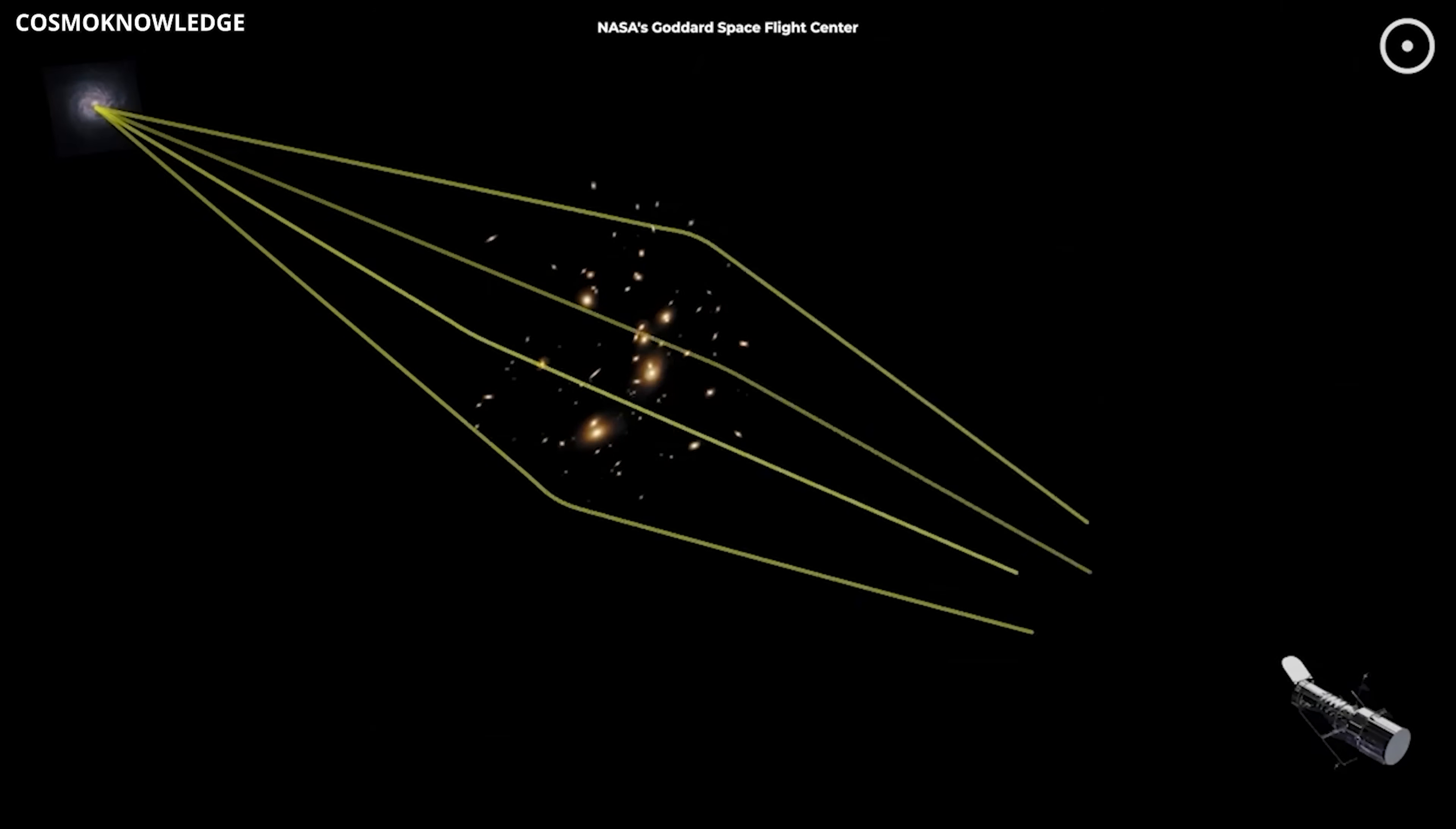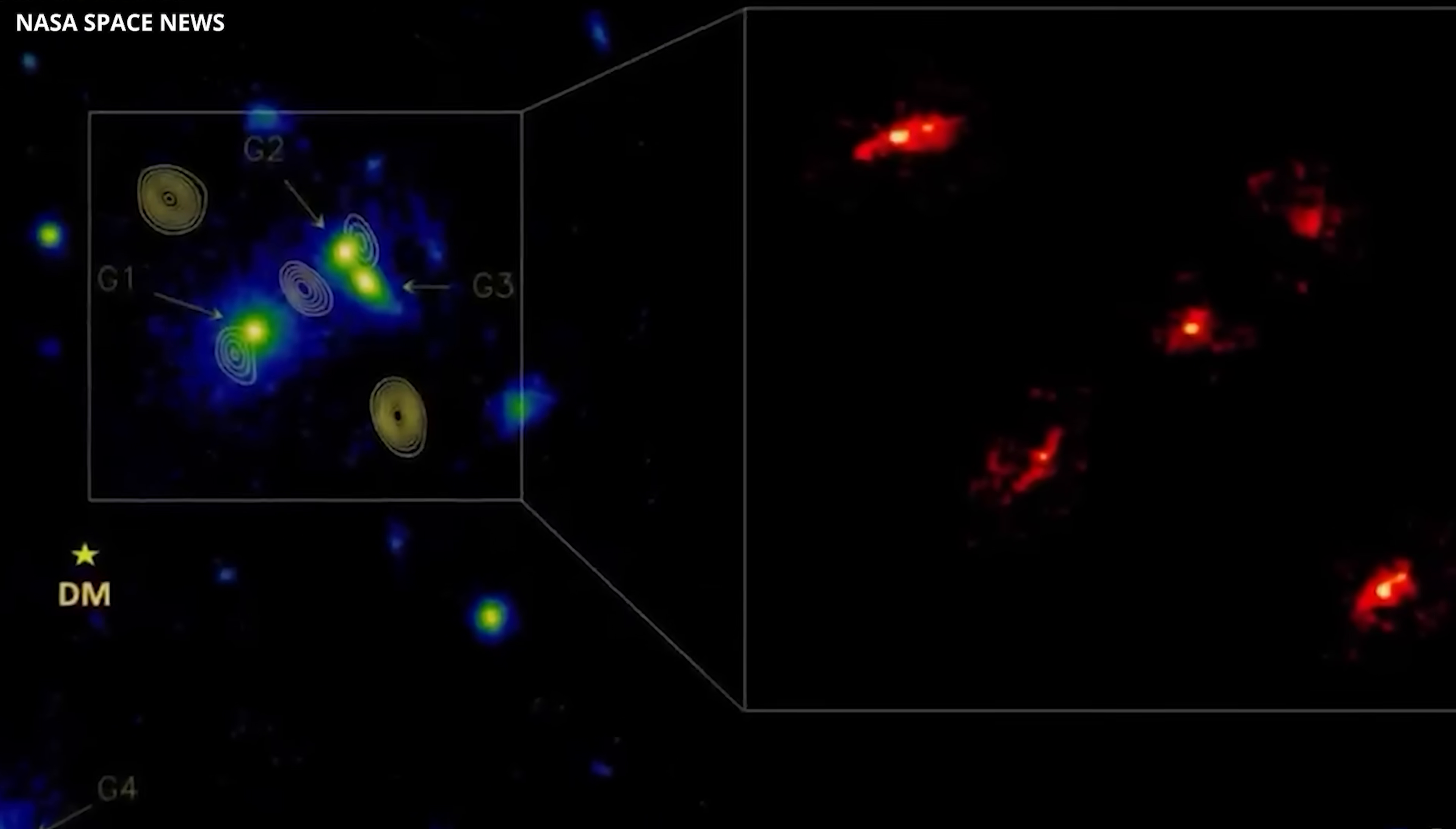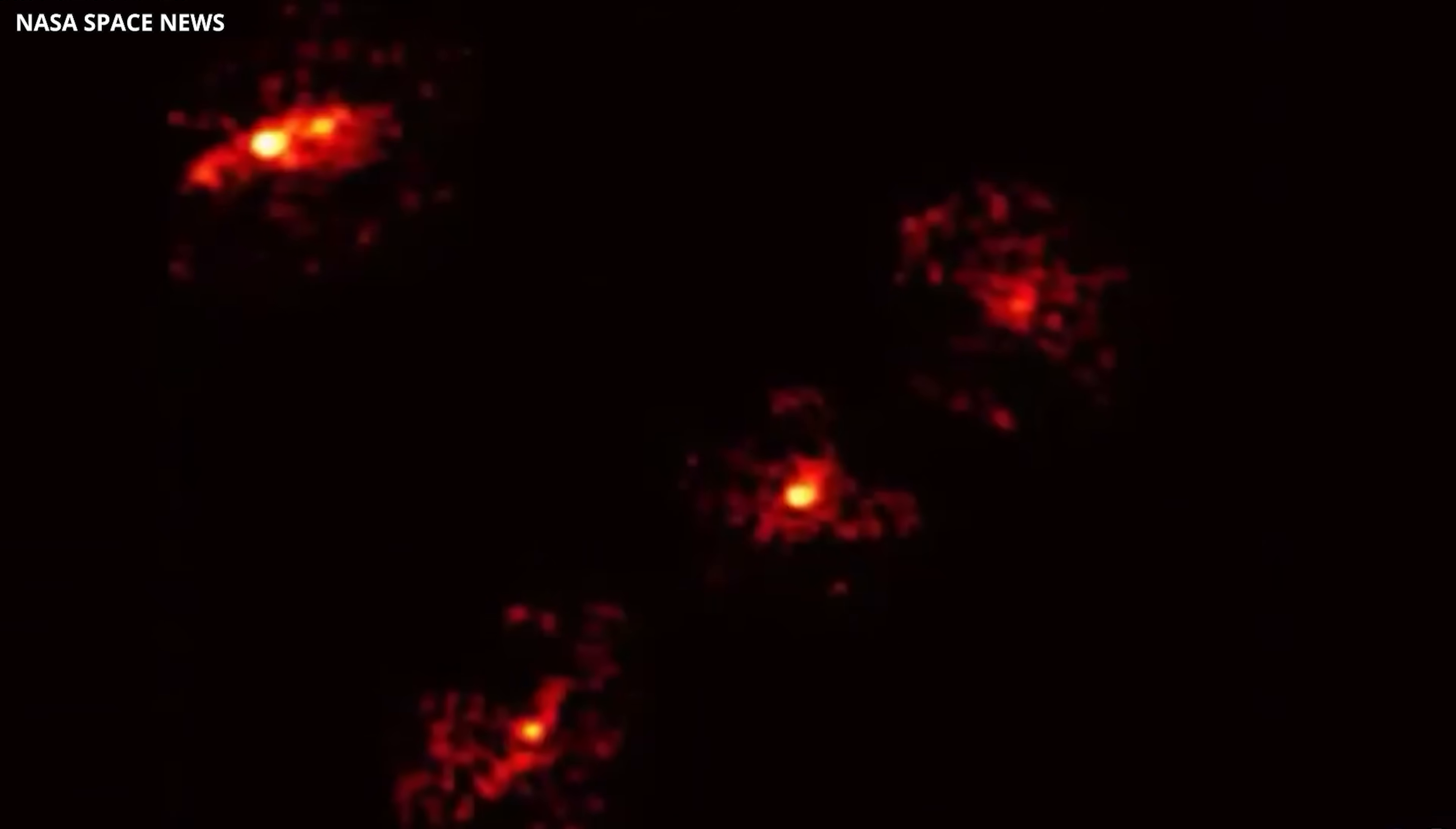When the team ran their simulations, the results were striking. No combination of visible matter could reproduce the five-image pattern. Tweaking the galaxy's shapes, positions, or masses didn't help. The physics of the luminous matter simply couldn't explain a central fifth image.